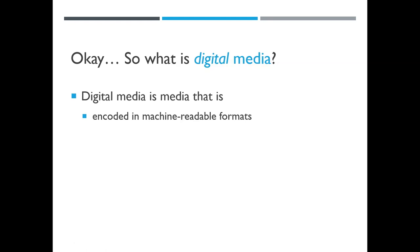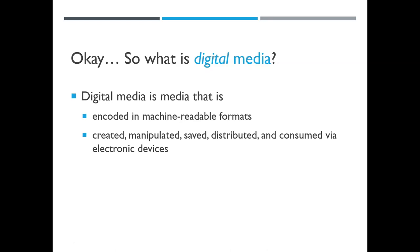Digital media in particular is about media that is encoded in machine-readable formats. We humans have designed all sorts of machines to do work for us. The information in those machines cannot be read the way it is by humans. The machines we create don't work on spoken language or written language — they work on their own logic, whether it be gears or computer code. Digital media is also media that is manipulated, created, distributed, saved, and consumed via electronic devices.